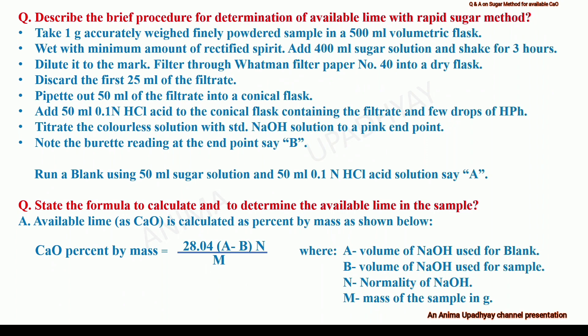Describe the brief procedure for the determination of available lime with the rapid sugar method. Take 1 gram accurately weighed finely powdered sample in a 500 ml volumetric flask. Wet with a minimum amount of rectified spirit. Add 400 ml sugar solution and shake for about 3 hours. Dilute to the mark and filter through Whatman filter paper number 40 into a dry flask. Discard the precipitate and the first 25 ml of the filtrate. Pipette out 50 ml of the filtrate into a conical flask. Add 50 ml of 0.1 normal hydrochloric acid along with a few drops of phenolphthalein. Titrate the colorless solution with standard sodium hydroxide solution to a pink end point. Note the burette reading — say it is B.